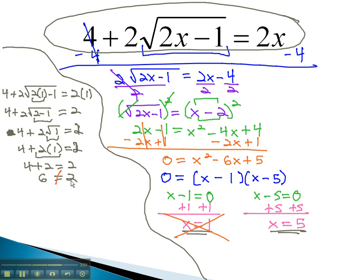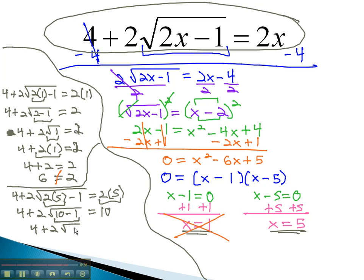We still must check the x equals 5. 4 plus 2, times the square root of 2x, or 2 times 5, minus 1, equals 2 times 5. Multiplying first, we get 4 plus 2, times the square root of 10, minus 1, equals 10. 10 minus 1 is 9, so we have 4 plus 2, times the square root of 9, equals 10.